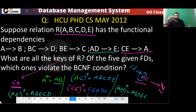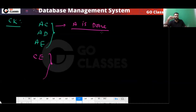Checking CB: CB can determine BCD, nothing else. So CB is not a candidate key. CD is also not a candidate key. C alone cannot determine everything either. So C is done — no new candidate keys starting with C alone or CB/CD.